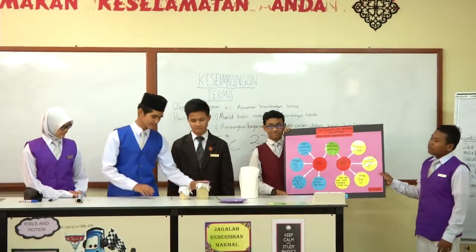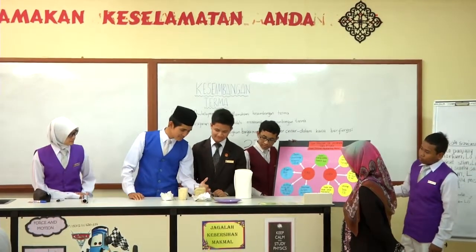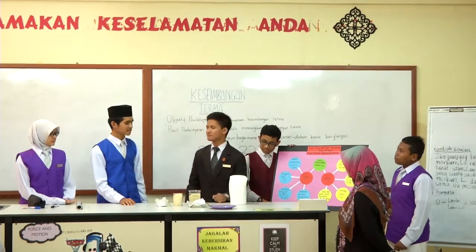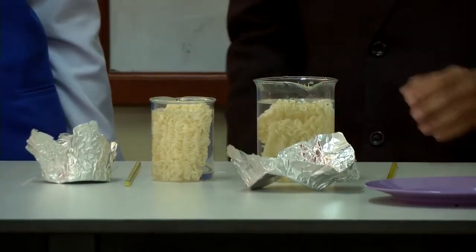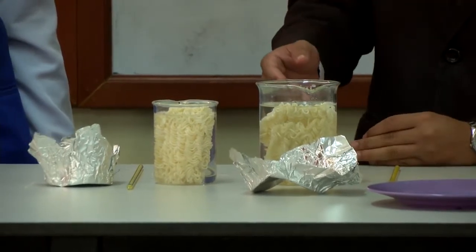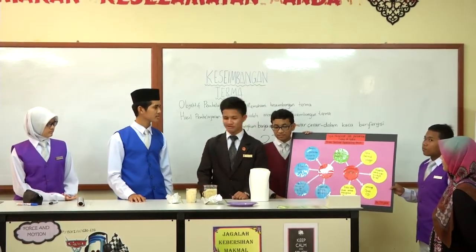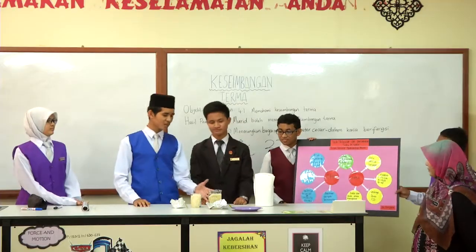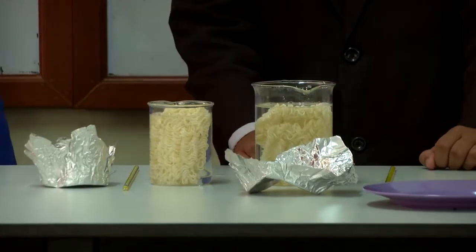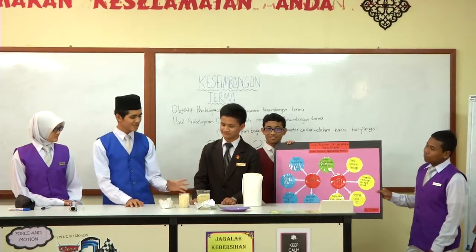Kami akan memeriksa setiap mee dalam bikar ini. Mengapa mee dalam bikar besar ini lebih mengembang daripada bikar kecil, padahal suhunya adalah sama? Ia disebabkan bikar besar mempunyai lebih banyak tenaga haba kerana ia mempunyai lebih banyak molekul jisim berbanding bikar kecil. Setiap molekul jisim mempunyai tenaga yang mempengaruhi sistem. Oleh sebab itu, bikar besar lebih cepat mengembang daripada bikar kecil.